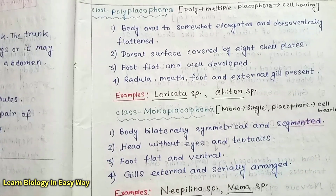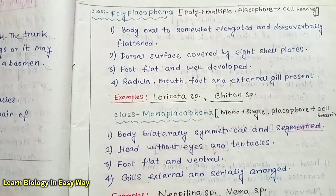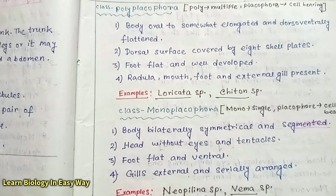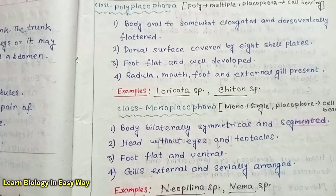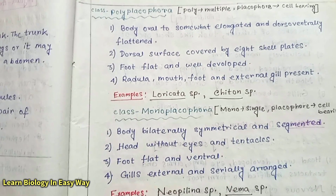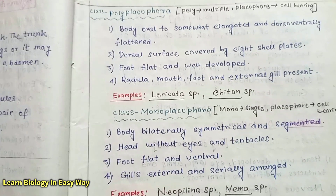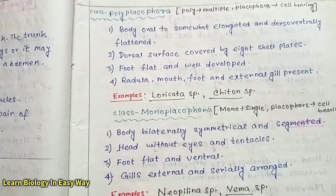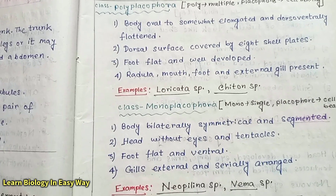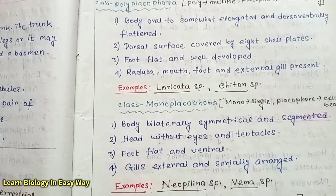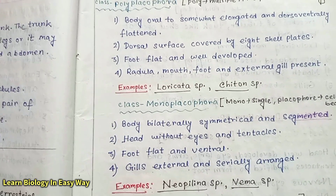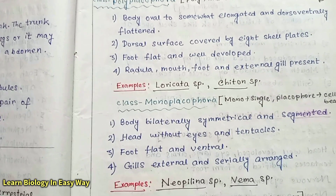Class Polyplacophora — 'poly' means multiple, 'placophora' means shell bearing. Body is oval to somewhat elongated and dorsoventrally flattened. Dorsal surface is covered by eight shell plates. Foot is flat and well developed. Radula, mouth, foot and external gills are present. Examples: Loricata sp., Chiton sp.